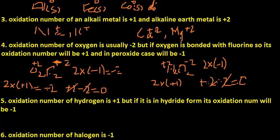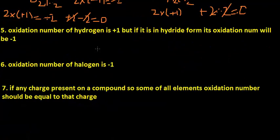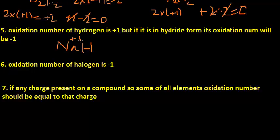Rule number five: the oxidation number of hydrogen is plus one, but if it is in hydride form its oxidation number will be minus one. For example, in NaH (sodium hydride), sodium is an alkali metal so its oxidation state is plus one, and hydrogen is minus one — plus one and minus one equals zero.